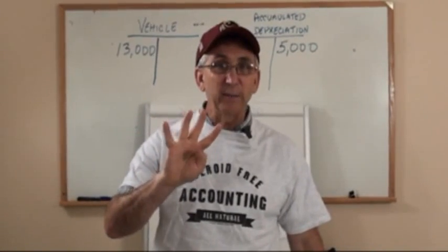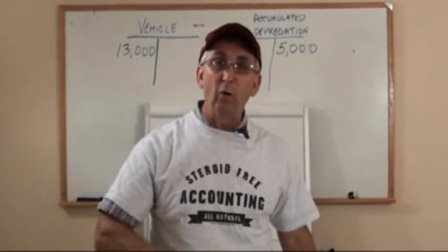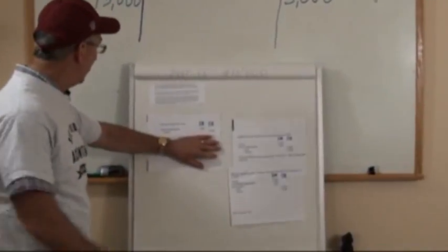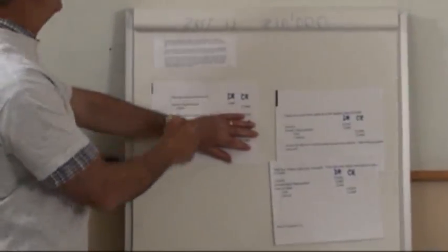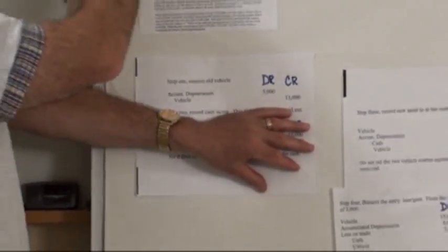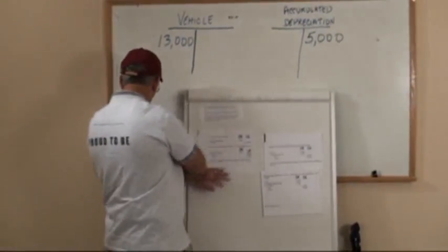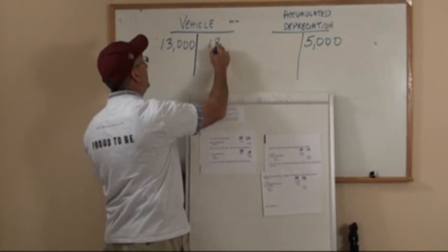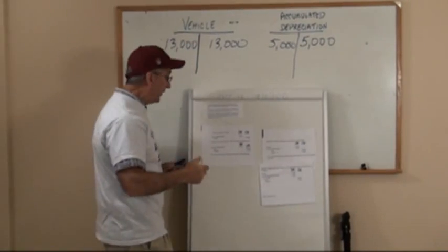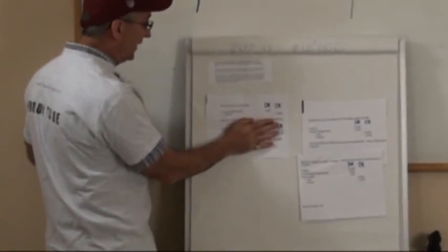We're going to follow the four accounting steps to record this trade-in. Step one is to always remove the old asset. Looking up at the board, the vehicle account had $13,000 and accumulated depreciation of $5,000 at this point. Our first entry is to flip these out and remove them, setting both accounts to zero because the vehicle is going to be gone. That's the purpose of this very first entry — that's step one.